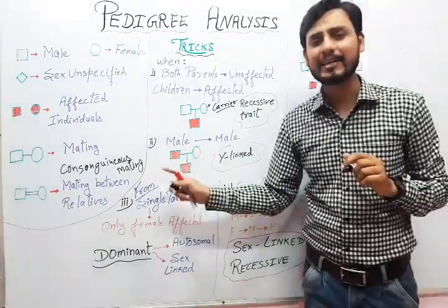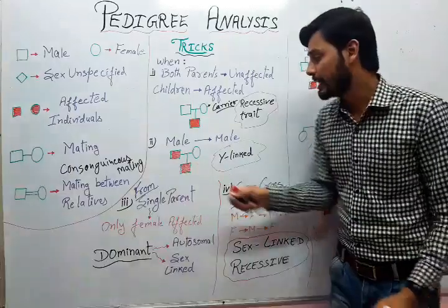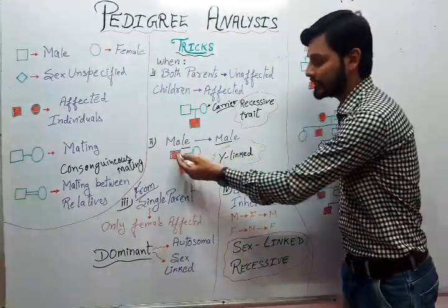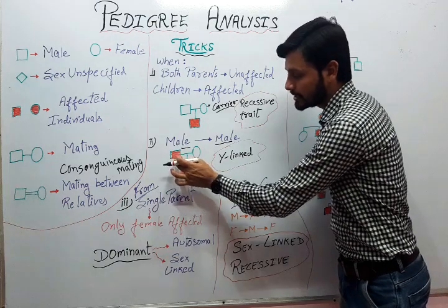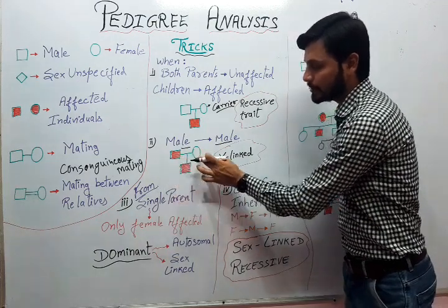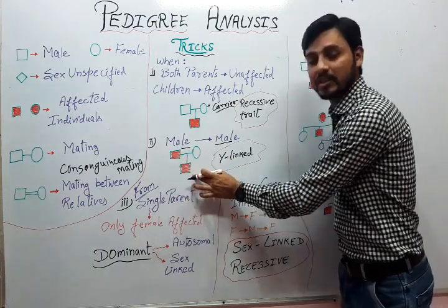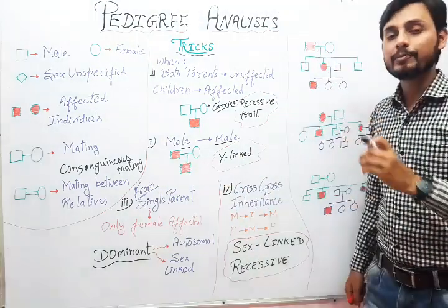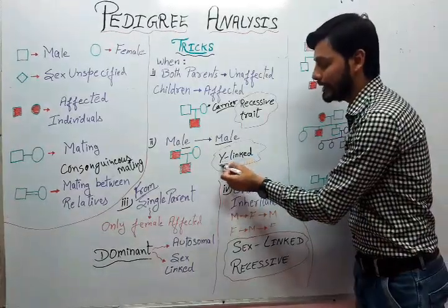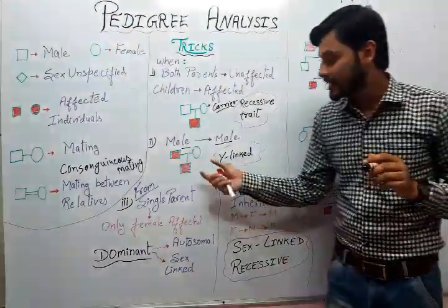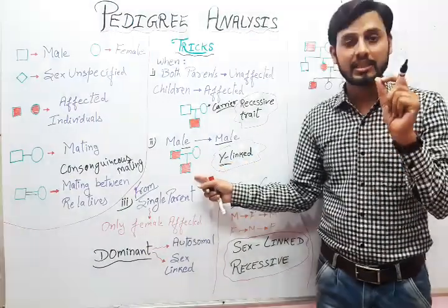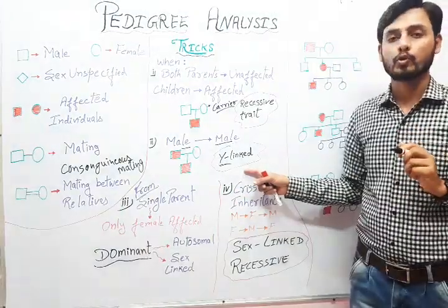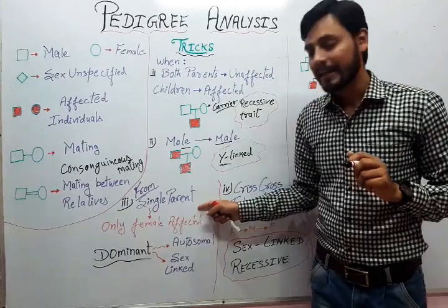The second trick: if characters are passed from male to male — that is from father to son — then that particular trait is a Y-linked trait, meaning the genes responsible for the expression of that character are present on the Y chromosome.